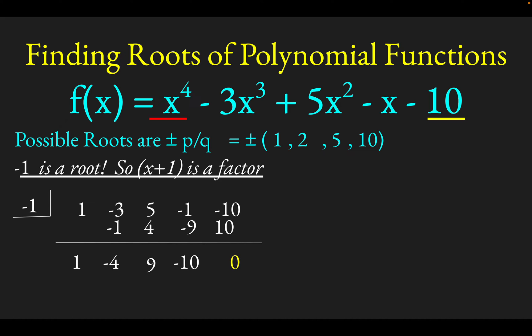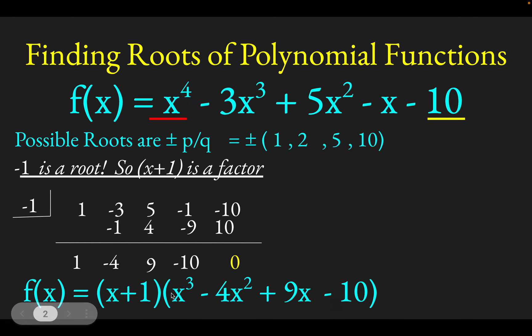The great thing about this is we can now reduce the order of this fourth order polynomial to x plus 1 times a cubic. The coefficients of the cubic are the results of our synthetic division here: 1, negative 4, 9, and negative 10, and there's no remainder. So now we only need to solve this cubic polynomial to find other roots or factors. We've made the problem simpler.